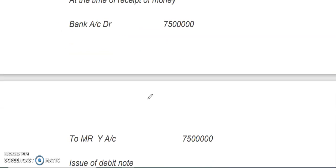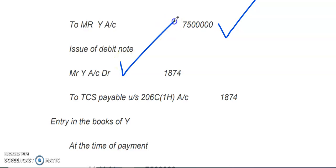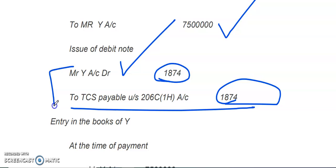For the entry in the books of X at the time of receipt of money: Bank Account is debited and Mr. Y's Account is credited with the total amount of 75 lakhs. At the time of collecting TCS, we issue a debit note. So at the time of issue of debit note, the entry in the books of X will be: Mr. Y's Account Debit with TCS amount 1,874 to TCS Payable under Section 206C-1H — 1,874. This is the new entry required due to Section 206C-1H.